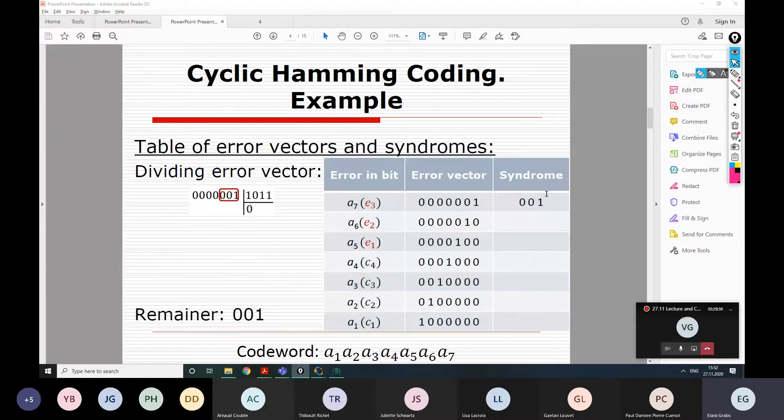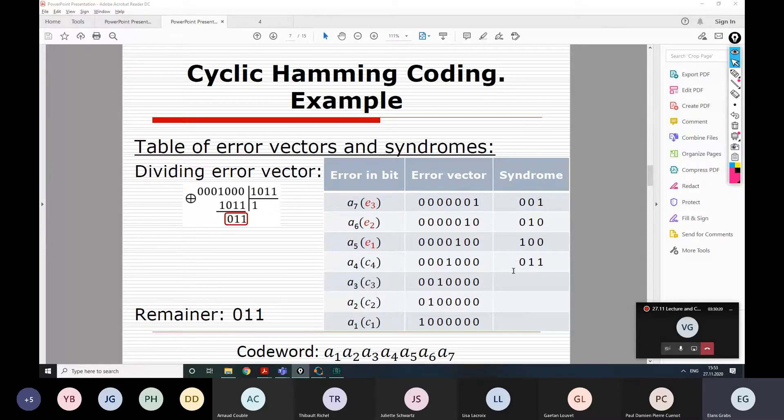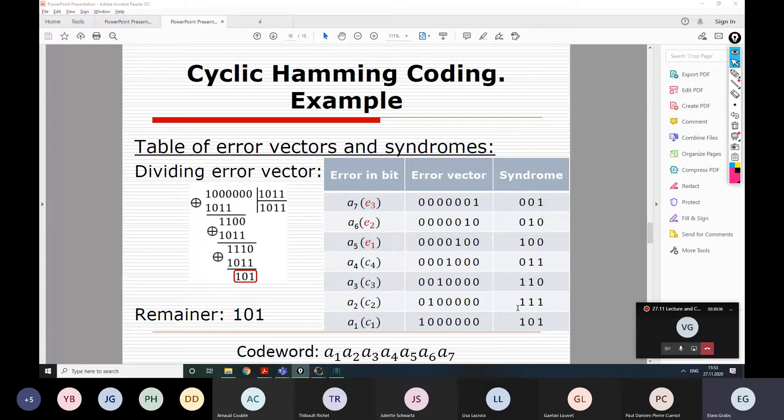Before going further, we need to have the table of error vectors and syndromes. As I have already showed you, there are two options how to calculate each syndrome. First option, you take the error vector and divide it by the generator polynomial and read the reminder after the divisions. Here we couldn't divide any single time, so the last three symbols have come as the syndrome. The same way we obtain the third syndromes. And starting from the fourth syndrome, we start to divide the process. This would be the fourth error vector divided, fifth error vector divided, sixth error vector divided and seventh error vector divided.